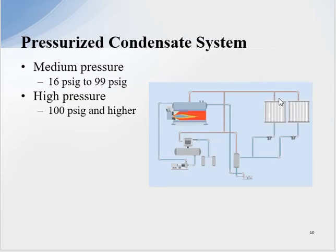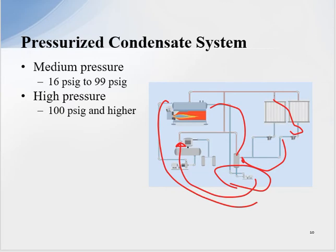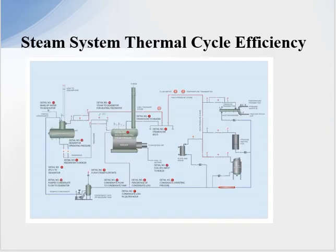In pressurized return systems, because we have high pressure on the process applications and the pressure is great enough, we can go into a pressurized return system and recover the flash steam. Depending on distances from the boiler plant, we might have a tank running at fifty PSI and then pump the condensate back to the deaerator, or possibly pump it directly back into the boiler. The goal with any system is to return the condensate as hot as possible, containing the flash and sensible energy to deliver to areas where we can recover it. This increases steam system thermal cycle efficiency, which is a critical benchmark today.